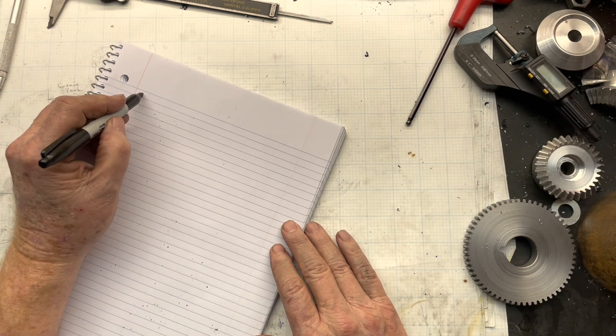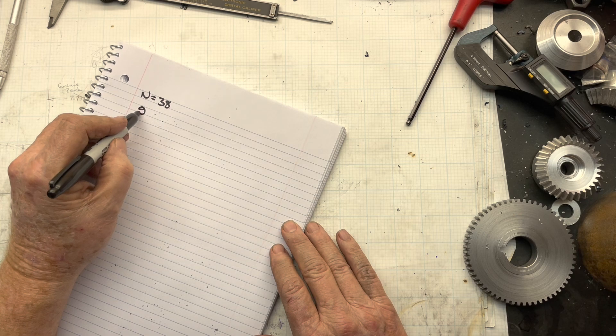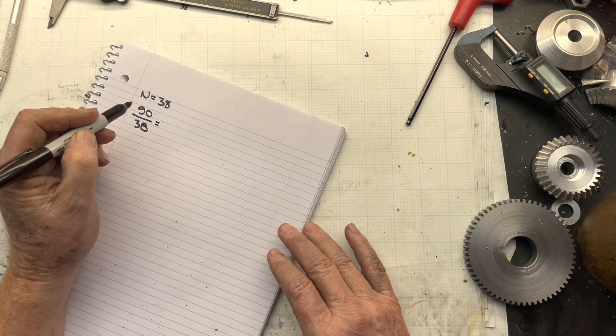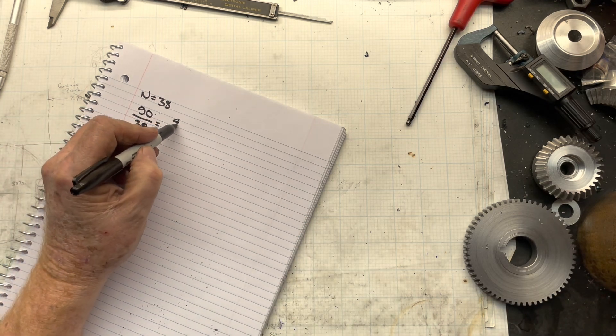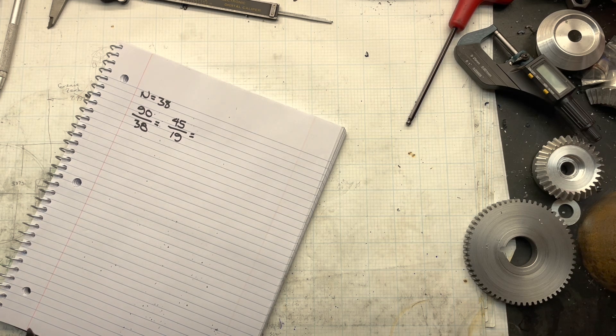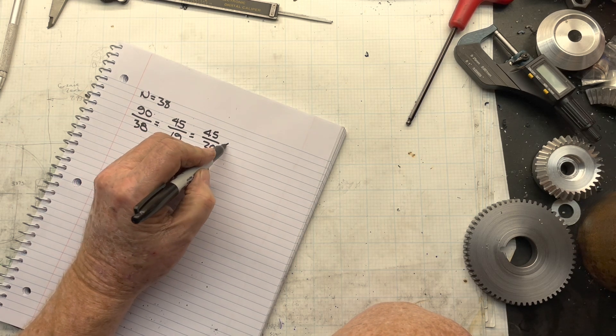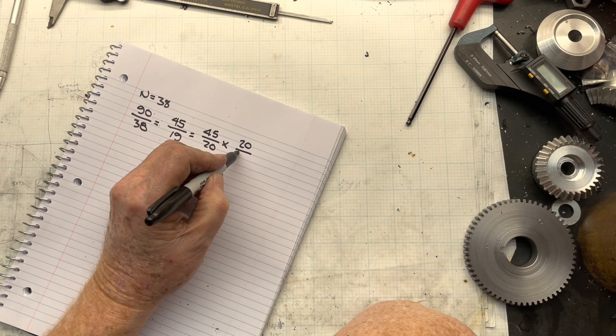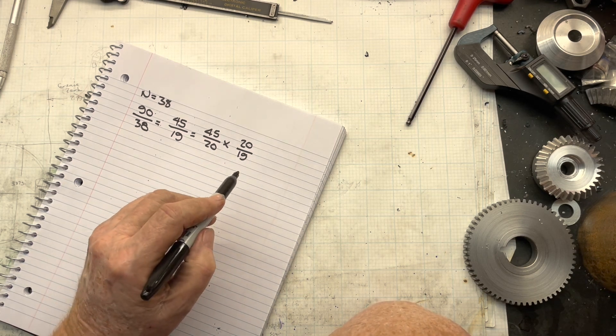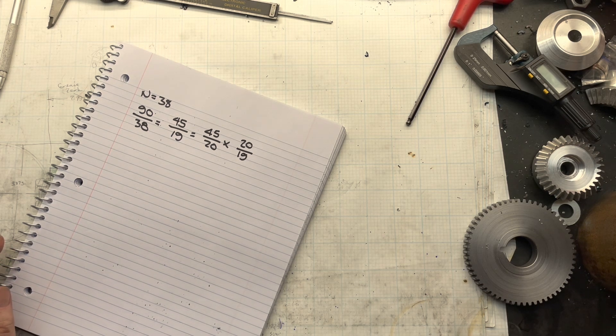Let's consider another example. Let's set n equal to 38. So, our fraction is 90 over 38. Again, for my machine. And we could divide that in half and get 45 over 19. Now, 19 is a prime number, so I can't break that down any farther. But what we can do is say 45 over 20 times 20 over 19. That gives us two stages.